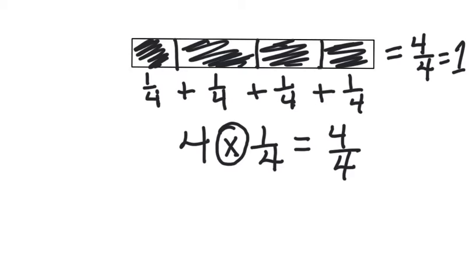So we have one fourth plus one fourth plus one fourth plus one fourth. We know that when whole numbers repeat, we can multiply, and it's the same concept with multiplying a unit fraction times a whole number. When they are repeating, it can be multiplied.